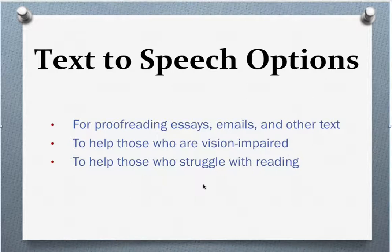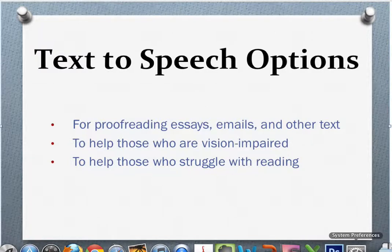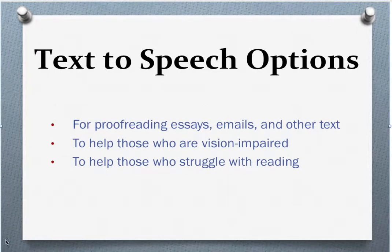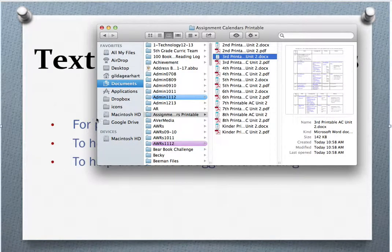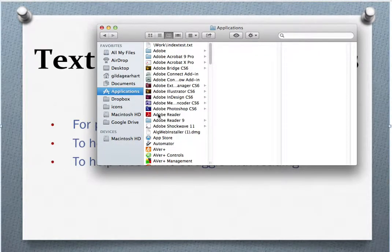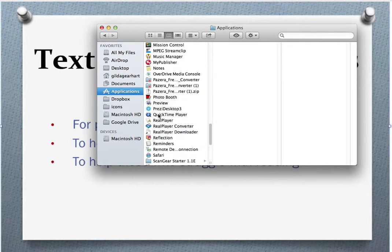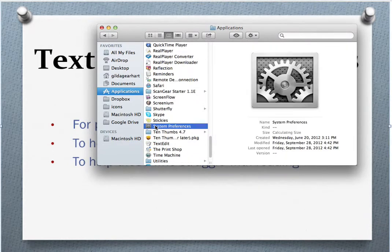We're going to look first in this screencast at how to set your Mac up to read to you. First, go down to the Dock and click on System Preferences. If System Preferences is not on your Dock, you can locate it by clicking on Finder, clicking on Applications, and then scrolling down to System Preferences.